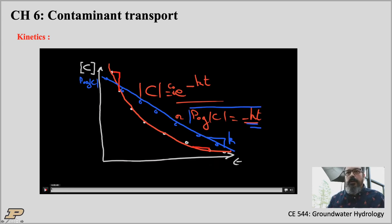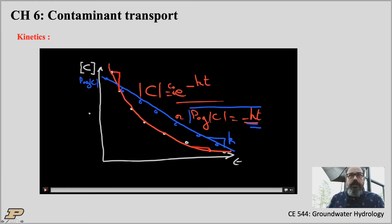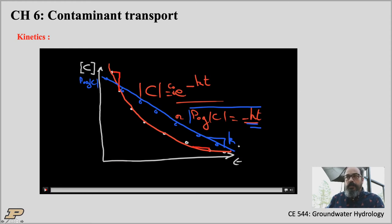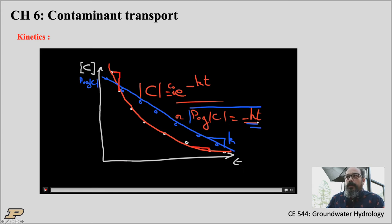Since this is an exponential decay, if we take the log of the y-axis — a semi-log transformation — the exponential becomes a straight line. Now the slope of that line is the rate constant for the exponential decay. The log of concentration decreases linearly with time, but it's the log of concentration, not the concentration itself.